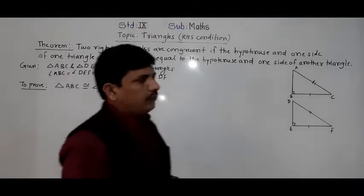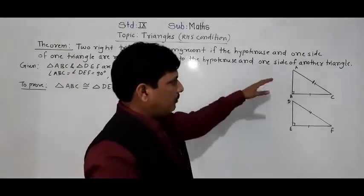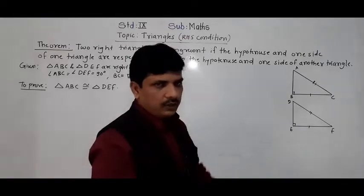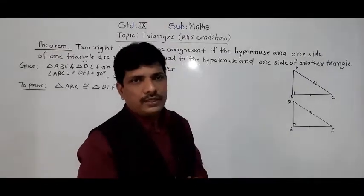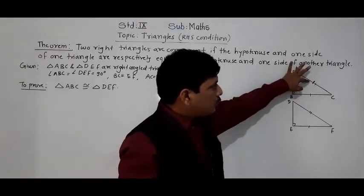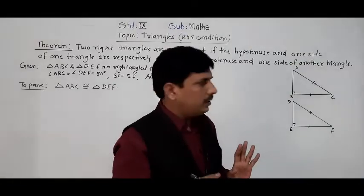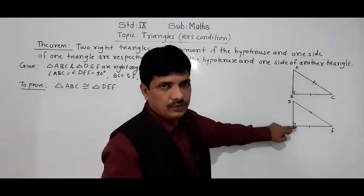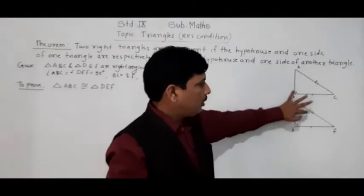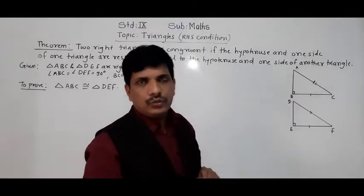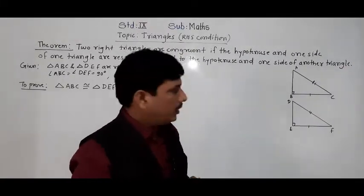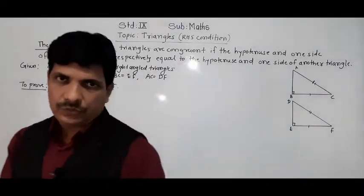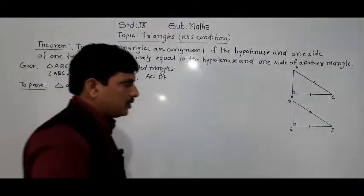In this condition, we cannot directly use any congruence criteria with the figures given. Two sides and an angle are given — that would be SSA — but there is no SSA criterion. So we need to do some construction here.